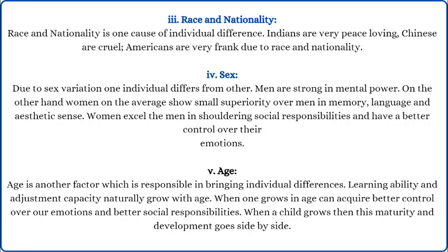Next is race and nationality. We also learn characteristics through race — physical characteristics like our appearance, complexion, and hair. These physical appearances are also an individual difference; we see differences between whites and blacks, for example. Nationality also influences us — Indians are considered very peaceful with different cultures and traditions, Americans are considered very frank. So according to nationality, we create differences between people.